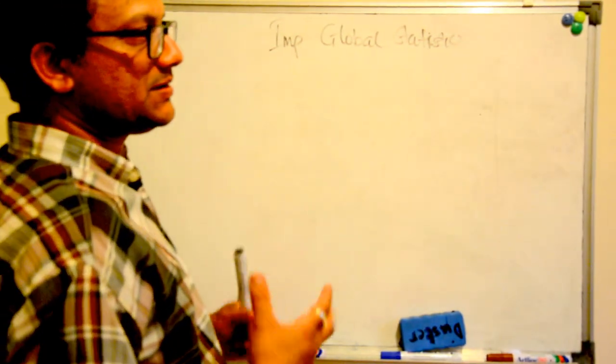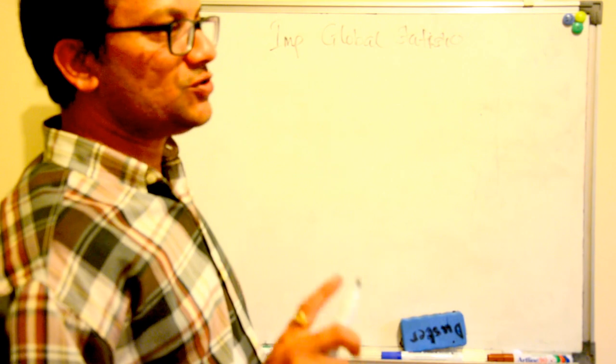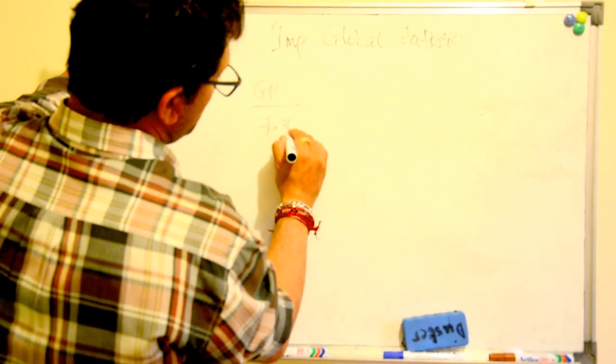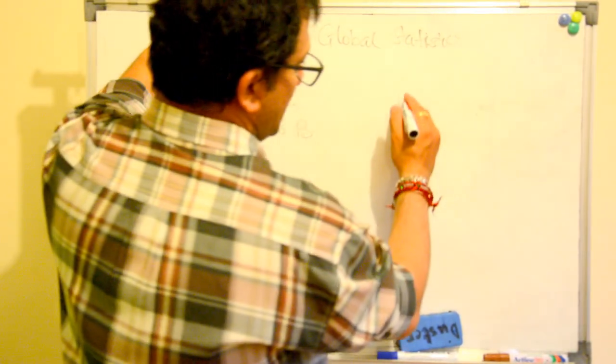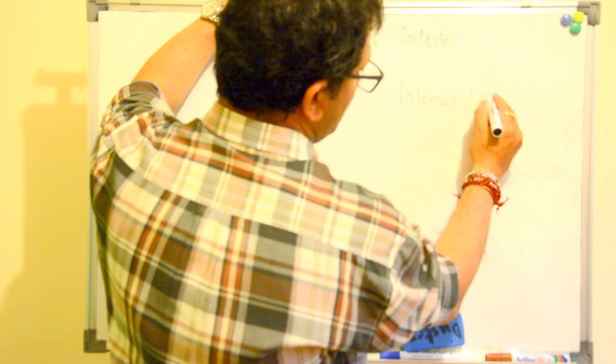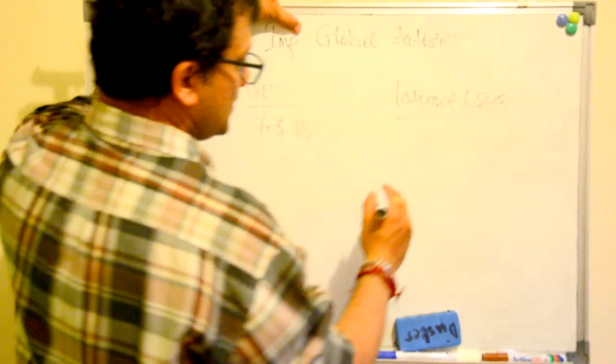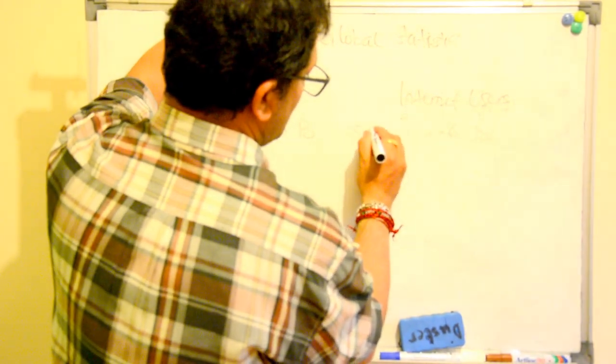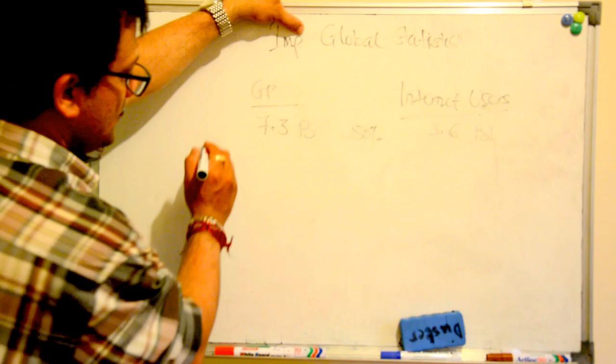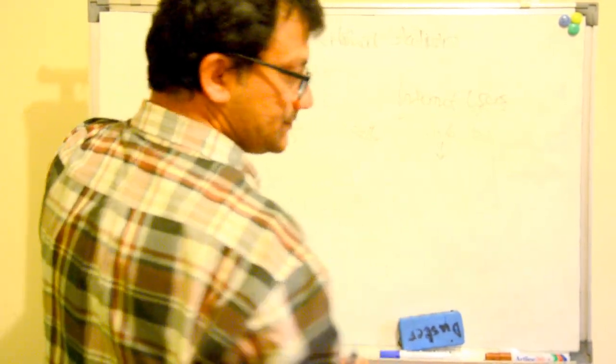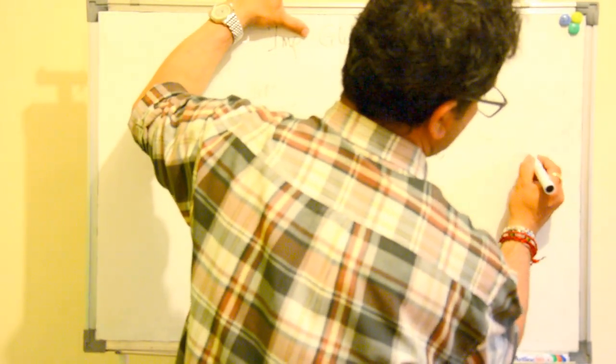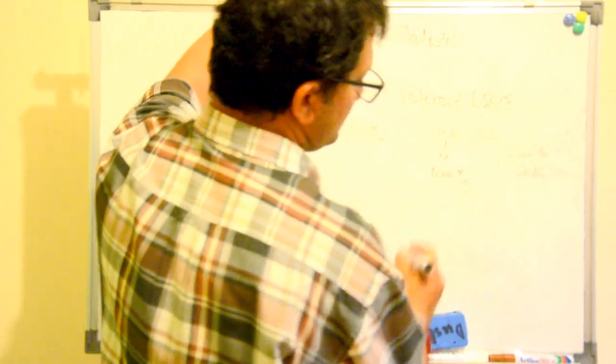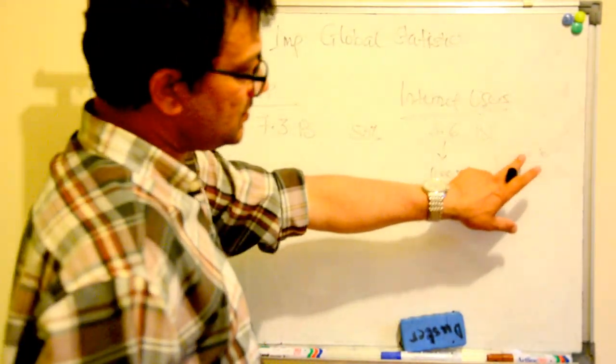Since I said that this is all towards the digital revolution, let me talk about internet users. Global population is 7.3 billion people, and internet users is 3.6 billion people, which is 50%. Now this number between 2000 to 2016 has grown up by 1000 percent.